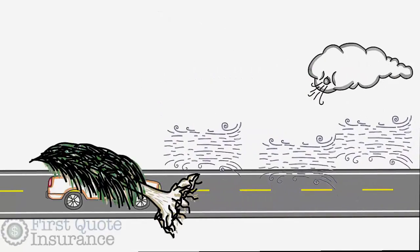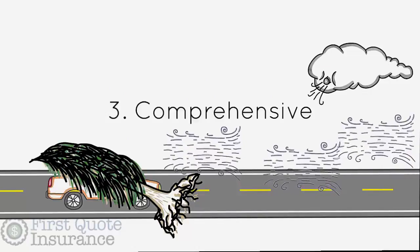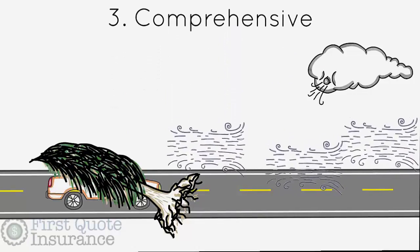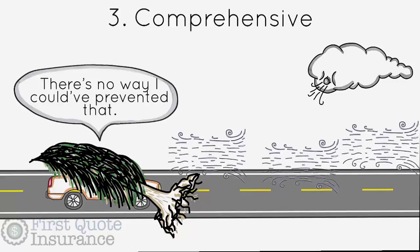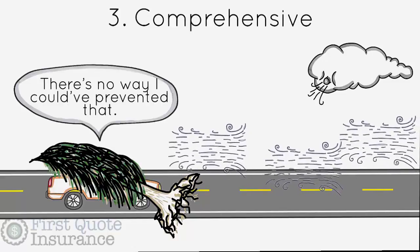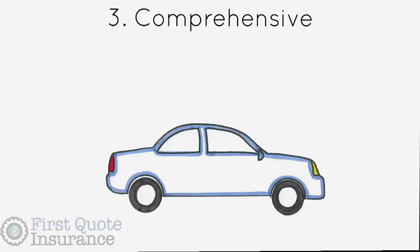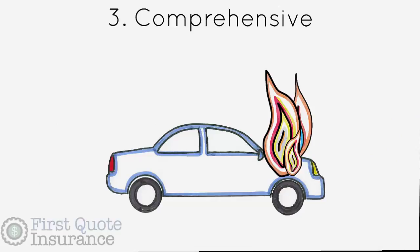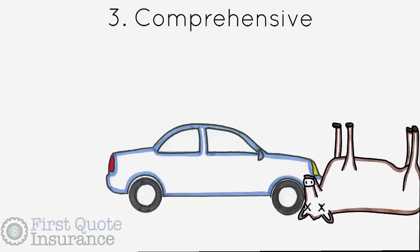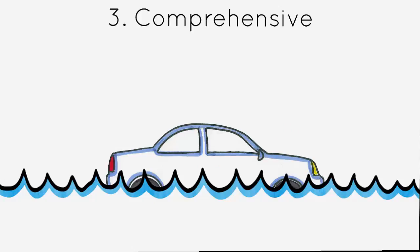For those things, you'll need something called comprehensive coverage. Comprehensive coverage kicks in to cover losses that are totally out of your control. Like collision coverage, comprehensive coverage is optional. It will protect you from losses due to fire, vandalism, theft, hitting an animal, or damage caused by certain natural disasters. But comprehensive coverage won't cover everything.